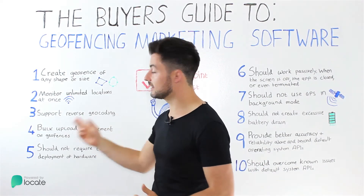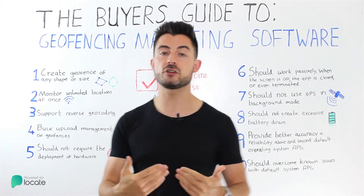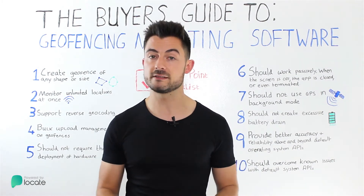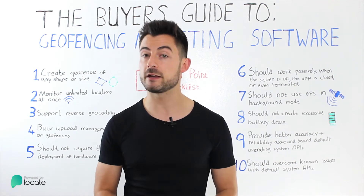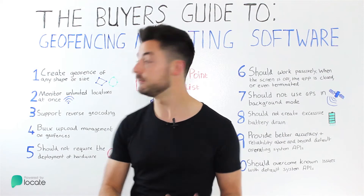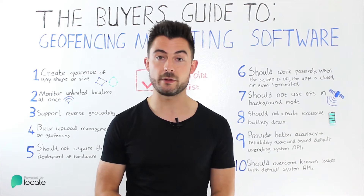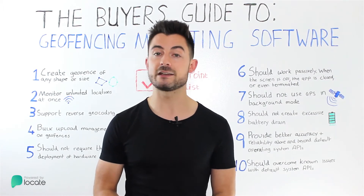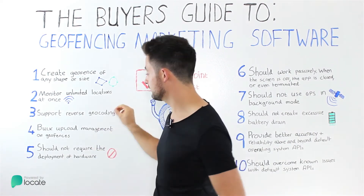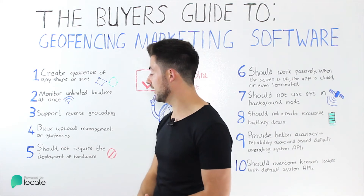Number four is similar to three, but more concerned with the competition. Make sure you can bulk import all of your competitors at once into the tool. For example, if your main competitor is Starbucks, you should be able to automatically — and in a polygonal way — geofence all Starbucks locations instantly, within North America or within 10 kilometers of downtown Atlanta, Georgia. Make sure you tick that one off with bulk importing.